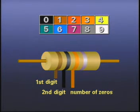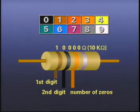Thinking of the third band as simply the number of zeros to add, the value would be read as brown representing one, black representing zero, and orange for three zeros, giving us a value of ten thousand ohms, ten k ohms.